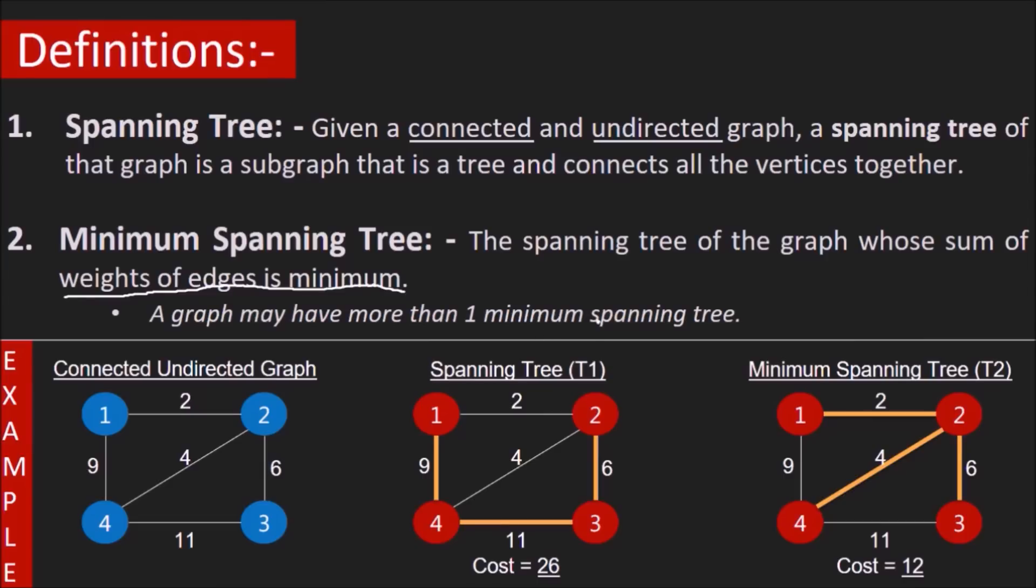For example, consider the given graph shown here. The edges highlighted in yellow are the edges of the spanning tree. Now both the trees shown here form one spanning tree because each of these contain 4 vertices, are connected, and do not contain any cycles. But tree 2 here has a cost lower than tree T1. In fact, tree 2 is a minimum spanning tree. So the sum of weight of its edges would be lower than any other possible spanning tree of the graph.